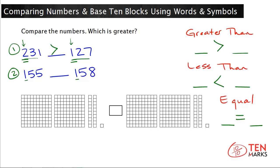If one number has a greater number of tens, then that number is greater. 155 has a five in the tens place, and 158 also has a five in the tens place. This means you have to go one more step and compare the digits in the ones place. In 155 there is a five in the ones place, and in 158 there is an eight in the ones place. Eight ones are greater than five ones, so 155 is less than 158.